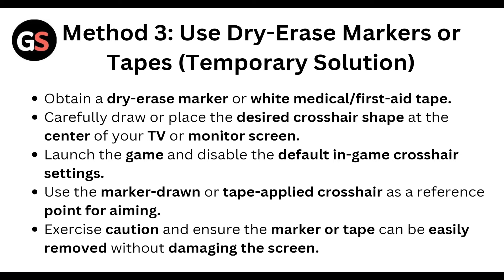You can also use a dry erase marker or tape as a temporary solution. Obtain a dry erase marker or white medical tape, then carefully draw or place your desired crosshair shape at the center of your TV or monitor screen. Analyze the game and disable the default in-game crosshair setting, then use the marker or tape as a reference point for aiming.